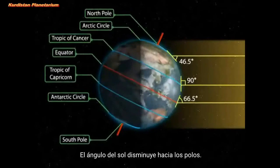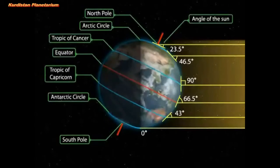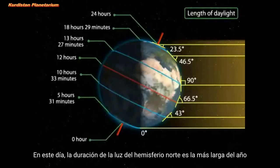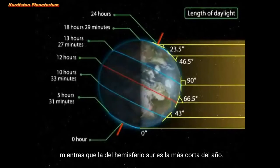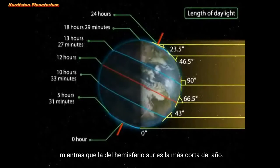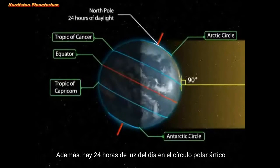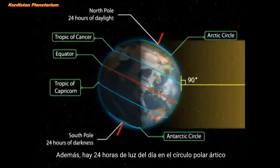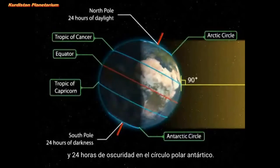The angle of the Sun decreases towards the poles. On this day, the length of daytime in the northern hemisphere is the longest in the year, while that of the southern hemisphere is the shortest in the year. Besides, there are 24 hours of daylight at the Arctic Circle and 24 hours of darkness at the Antarctic Circle.